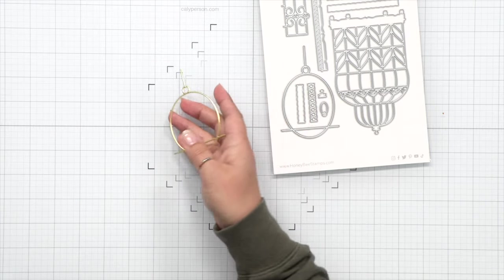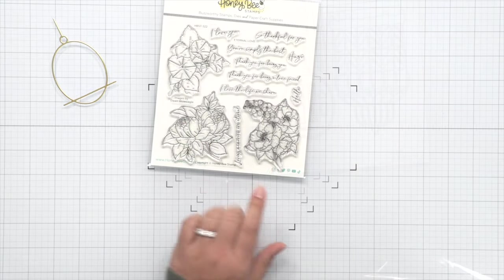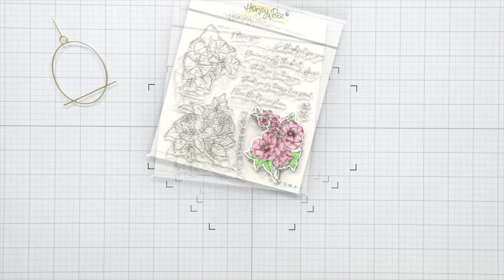For the Birdcage dies, I'm just going to be using this ring here that the birds are going to be sitting on. It's such a great accent piece for the card.